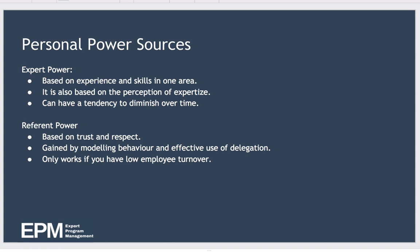Now let's look at the personal power sources, starting with expert power. You use expert power when you use your experience in a particular area and a past history of demonstrating solid judgment in that area to achieve compliance with your wishes. Subordinates believe that your past experience will guide you to make the right decision — essentially you're a thought leader in a specific domain. Expert power can also come from reputation or from qualifications. It's worth noting that the expertise doesn't need to actually exist, but the perception of this expertise must exist.